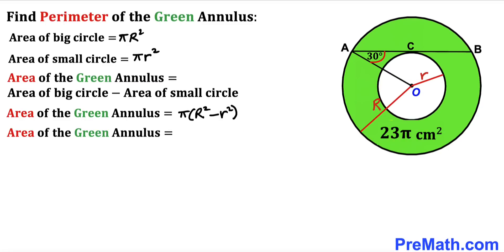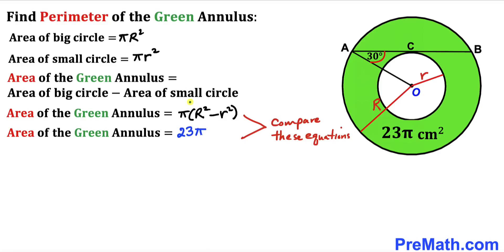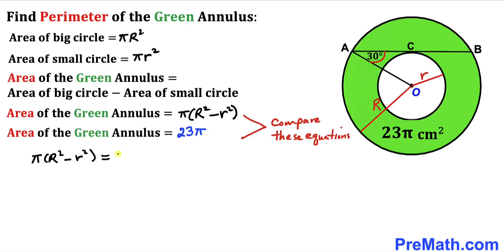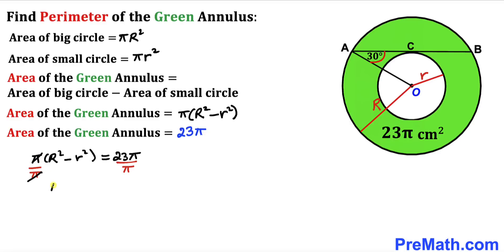We know that the area of the green annulus is given as 23π square centimeters. Equating the two expressions, we get π times (R squared minus r squared) equals 23π. Dividing both sides by π, we end up with uppercase R squared minus lowercase r squared equals 23. Let's call this equation number one.